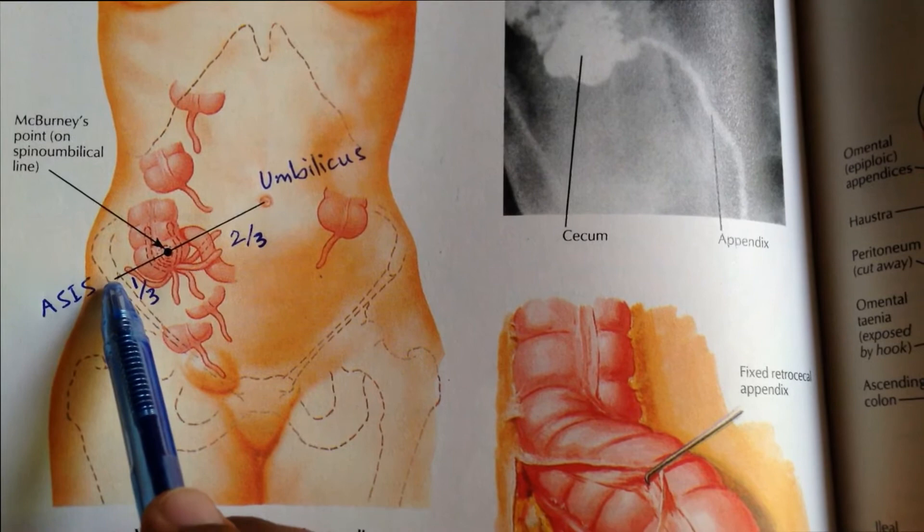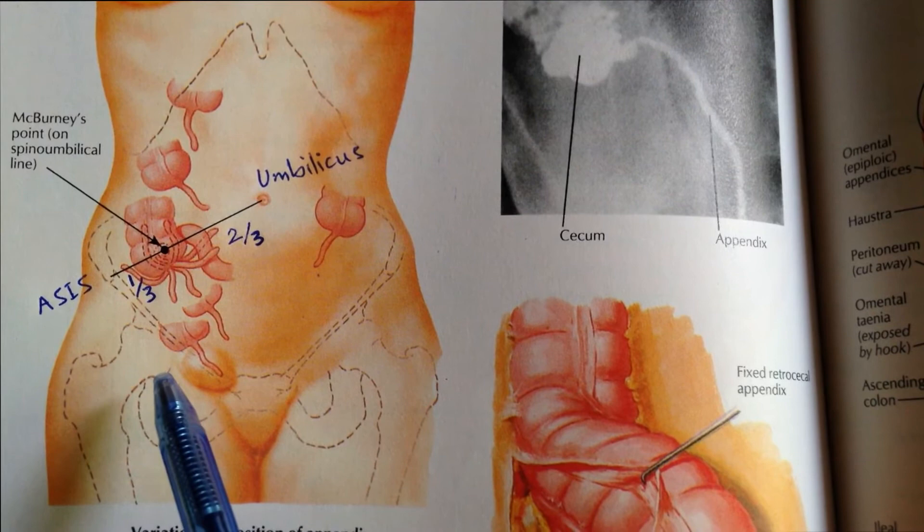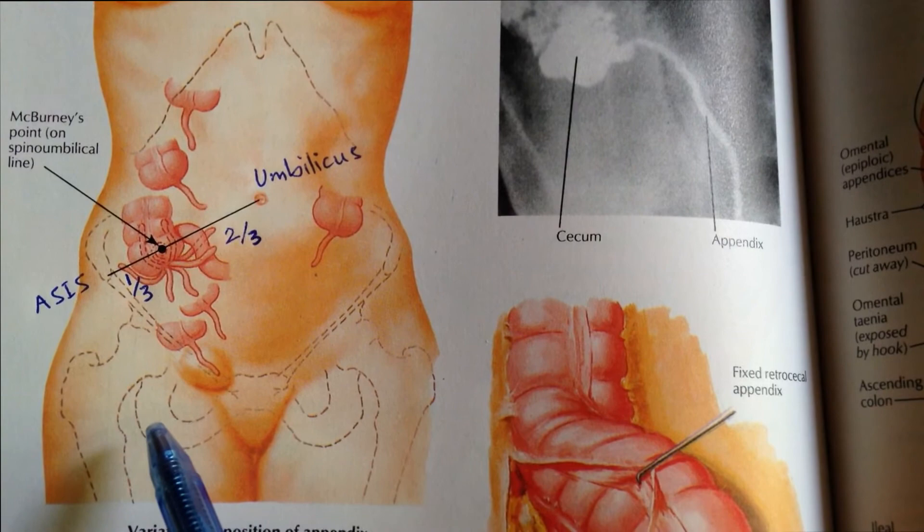McBurney's point corresponds to the most common location of the base of the appendix where it is attached to the cecum. Deep tenderness at McBurney's point is called McBurney's sign, and McBurney's sign is a sign for acute appendicitis.